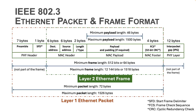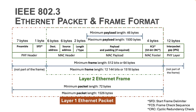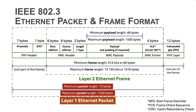In our previous video we have seen the fields of an Ethernet frame, where an Ethernet frame starts first with the MAC header, then the MAC payload and padding if required, and it ends with the MAC footer. In this video we are going to zoom out and talk about the Ethernet packet format which is layer 1 of the OSI model. This figure here shows the complete Ethernet packet structure where the maximum length is 1526 bytes and minimum 72 bytes.